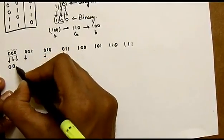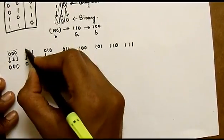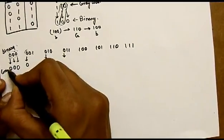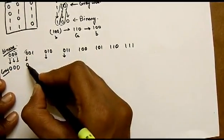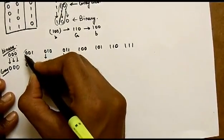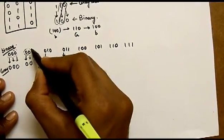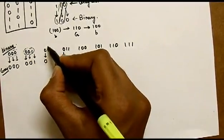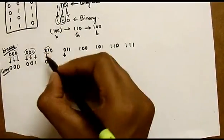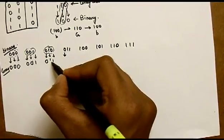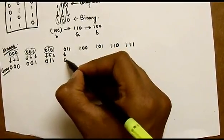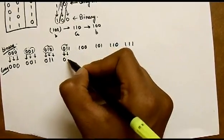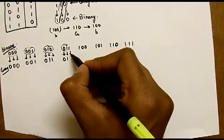0 and 0 XOR is 0. MSB is always the same, so we write it directly. 0 and 0 XOR is 0. 0 and 1 XOR is 1. 0 and 1 XOR is 1. MSB is always the same. 0 and 1 XOR is 1. 1 and 0 XOR is 1. 0 and 0 XOR is 0.